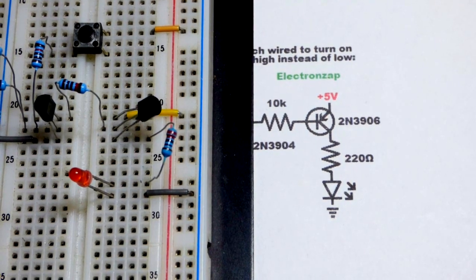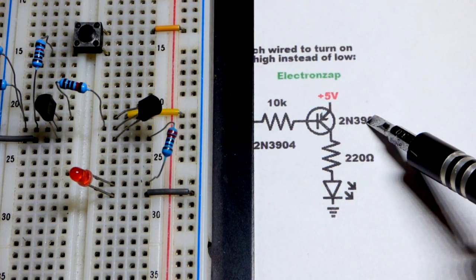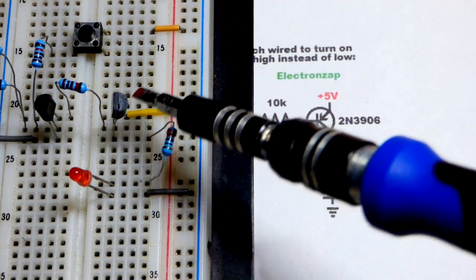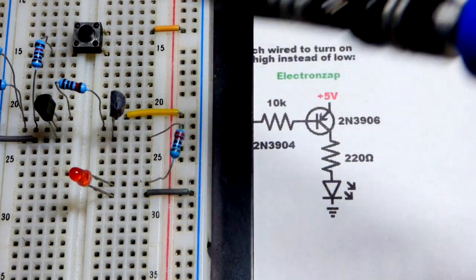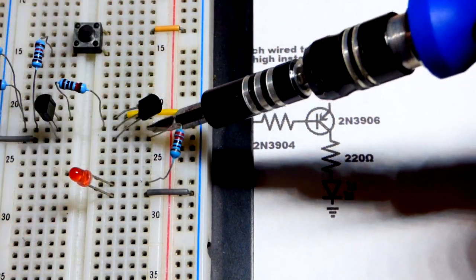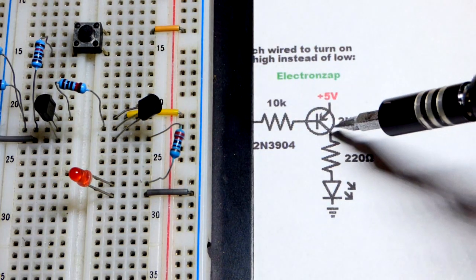So here we are on the board, 2N3906 PNP type bipolar junction transistor. Flat side is facing to the left, as you may be able to see right there. That means that the top pin is the emitter, middle pin is the base, and the bottom pin is the collector right there.